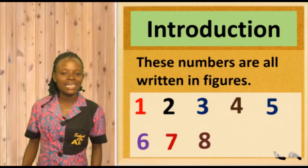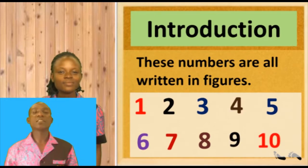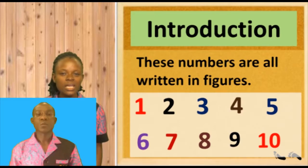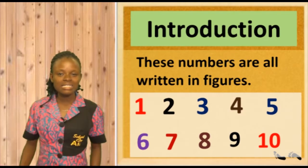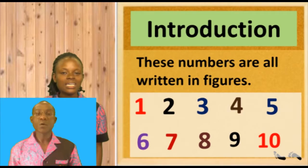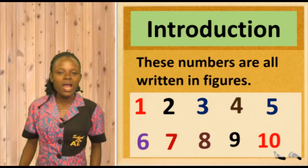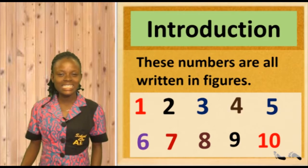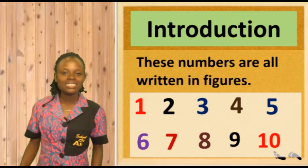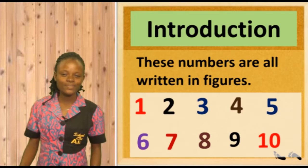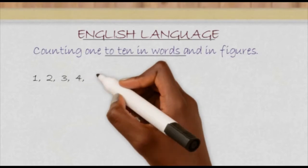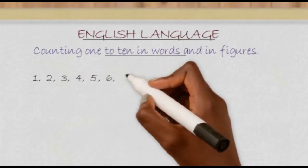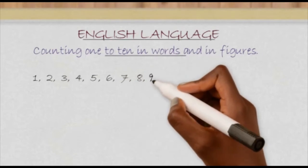These numbers are written in figures. We have numbers 1, 2, 3, 4, 5, 6, 7, 8, 9, and 10. Now let's take that together: 1, 2, 3, 4, 5, 6, 7, 8, 9, 10.